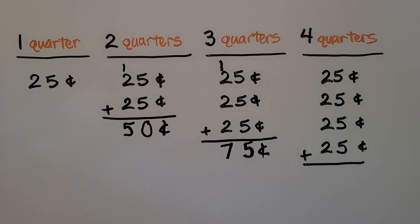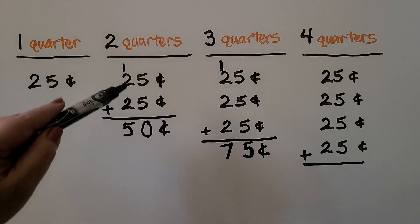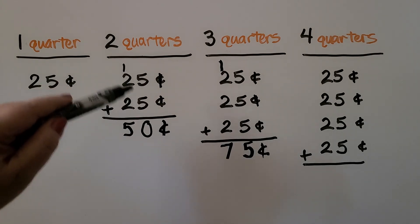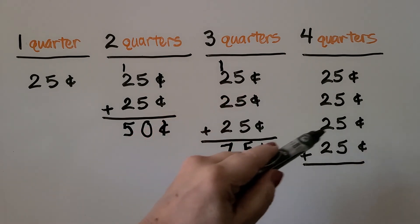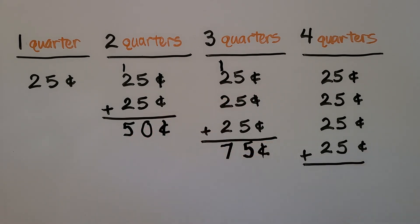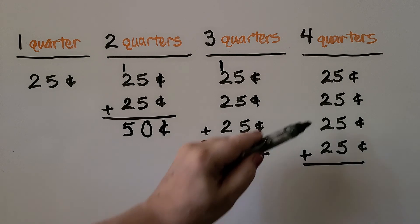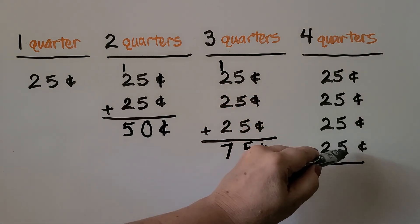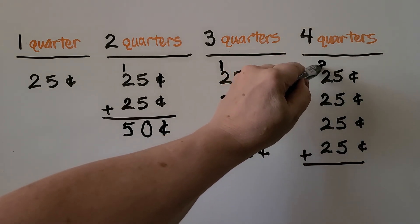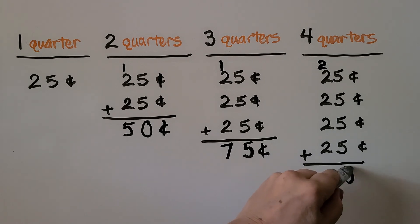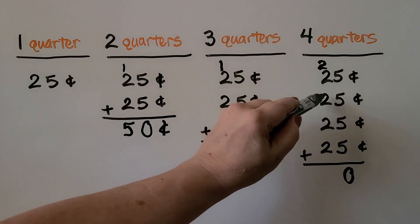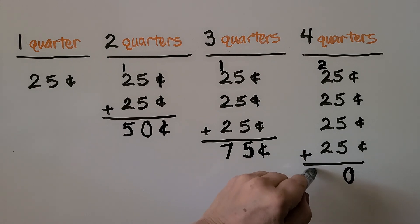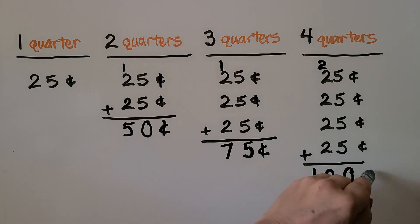And four quarters — well, we can look at it as 25 and 25 is 50, then we have 50 and 50, which is 100. We can also skip count: five, 10, 15, 20. We regroup two tens and put a zero down. Then we skip count two, four, six, eight, 10. That's 100 cents. And we remember to put the cent symbol.